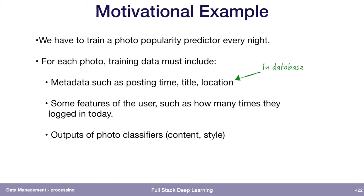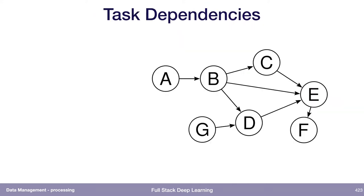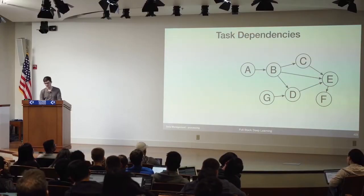So where is the metadata? The posting time, title, and location are in our database. The features of the user, like how many times did they log in today — maybe that's in our database, but maybe it's in our logs only. So we actually need to compute how many times the user logged in from the logs. And the photo classifiers — we either store that somewhere else, or we need to run them every single night at training time. You have different sources of data and they might have different dependencies. To train our final photo popularity model, we first need to run our content classifiers. An input feature to the model we're trying to train is the output of another model that we need to run.